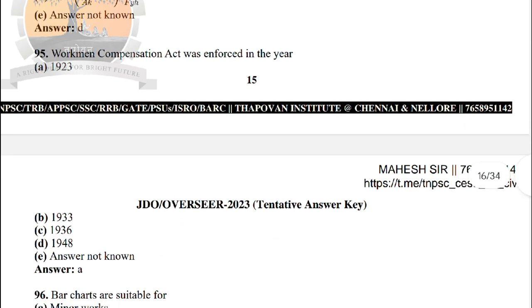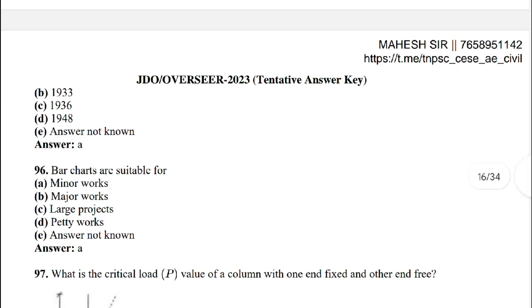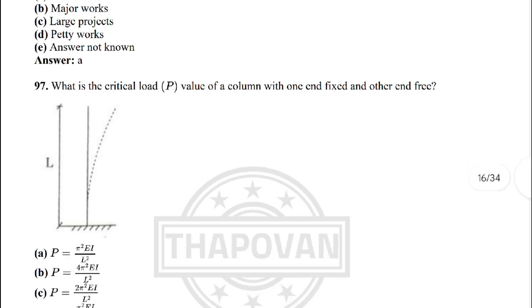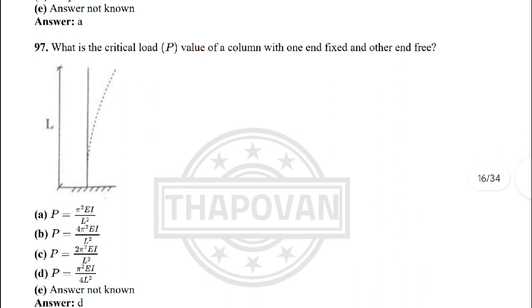Next: the Workmen's Compensation Act was enforced in the year — option A: 1923. Next: boards are suitable for — option A: minor works.